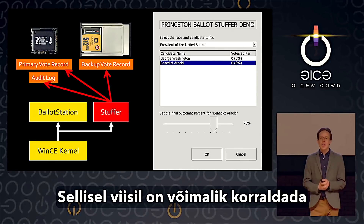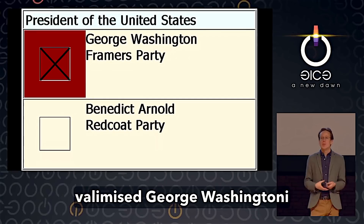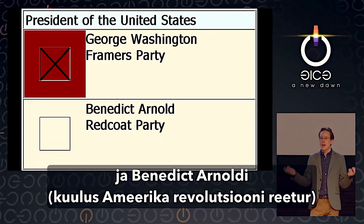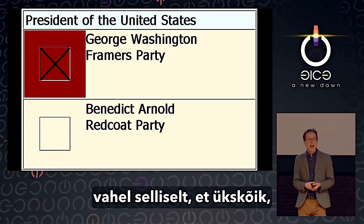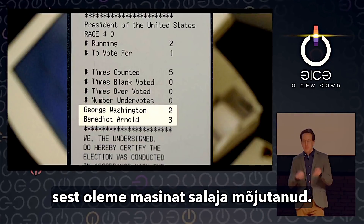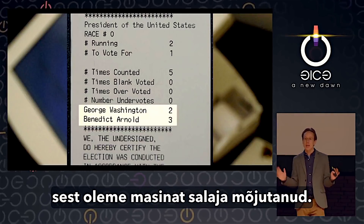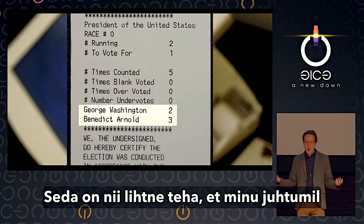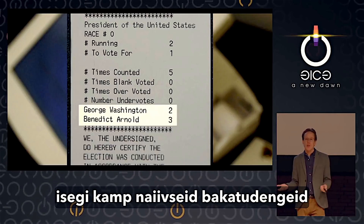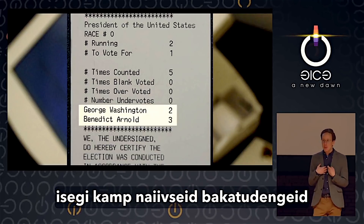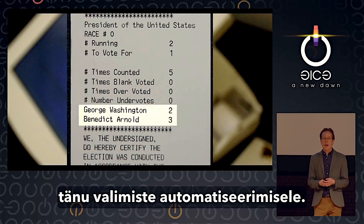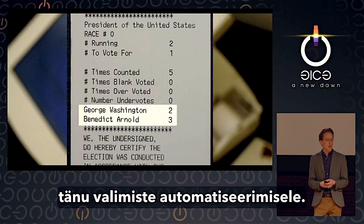We came up with an application called the stuffer that you could load into the machine. It would present a nice UI on the touchscreen, let you pick who you wanted to vote for and by how much, then change every record of the vote in electronic memory. In that way, you could have an election between George Washington and Benedict Arnold, and Benedict Arnold would always win because we had tampered with the machine. This is so easy to do that even naive grad students could pull it off in a few weeks.